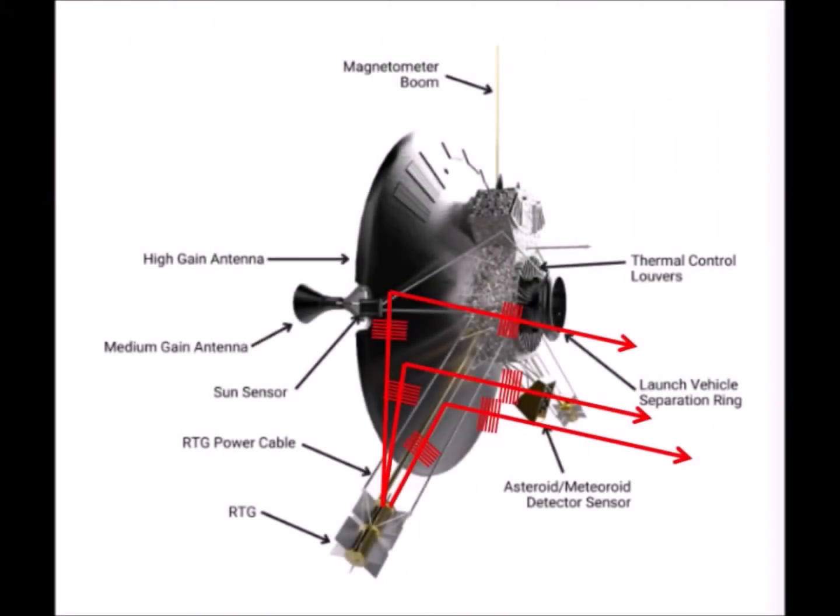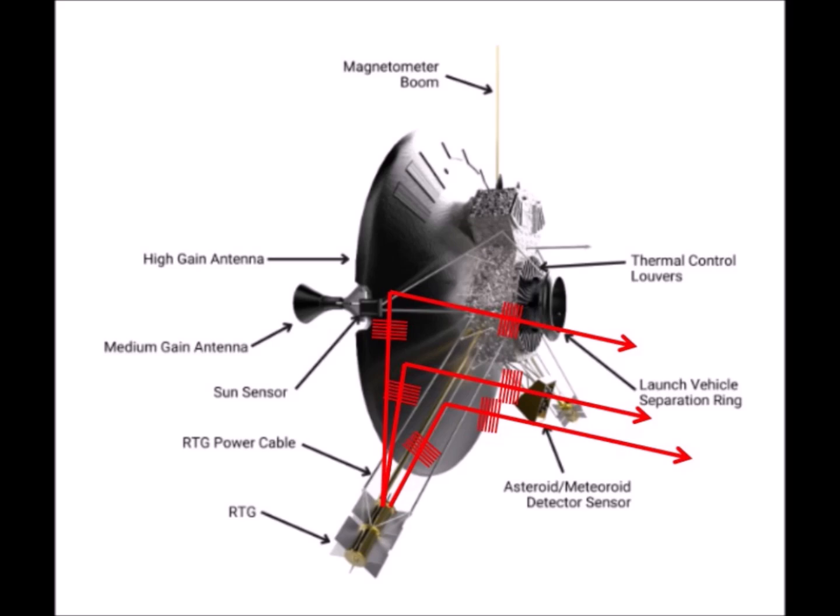The Pioneer anomaly received an explanation in 2011 based on the wave pressure of infrared radiation emitted by radioisotope thermoelectric generators. This radiation is emitted in all directions, but a part is reflected by the back of the space probe's parabolic antenna.